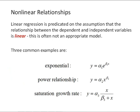Let's look at some typical nonlinear relationships. Linear regression is predicated on the assumption that the relationship between the dependent and independent variables is linear - y equals a0 plus a1x. This is often not an appropriate model for the data. Here's some common examples that are nonlinear. We can have an exponential relationship where y equals alpha1 e to the beta1x. We can have a power relationship: y equals alpha2 times x to the beta2. Again, we have two constants similar to linear regression, but it's not in a linear form.